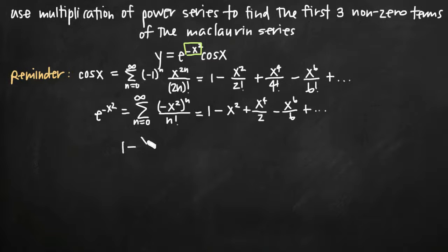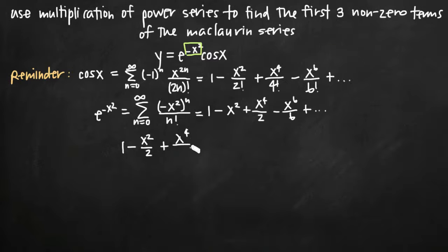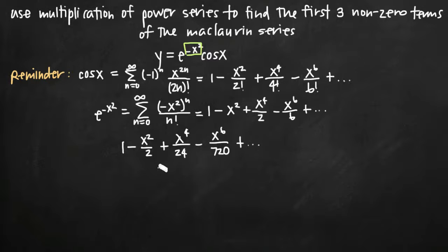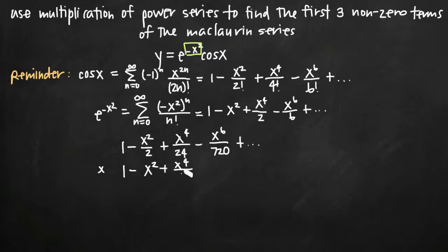We take the cosine of x power series expansion and multiply it by the power series expansion of e to the negative x squared. Cosine of x is written as 1 minus x squared over 2 plus x to the fourth over 4 factorial (which is 24) minus x to the sixth over 6 factorial (which is 720), plus dot dot dot. Then we multiply that by 1 minus x squared plus x to the fourth over 2 minus x to the sixth over 6, plus dot dot dot.